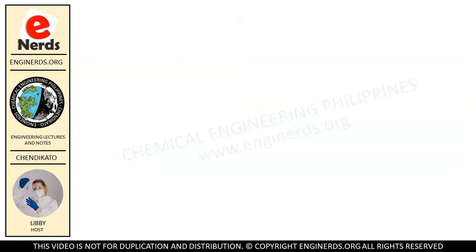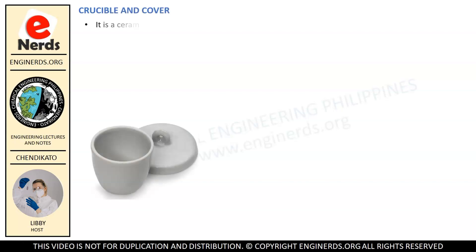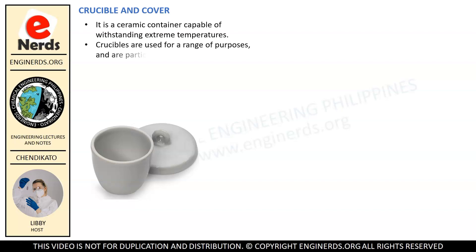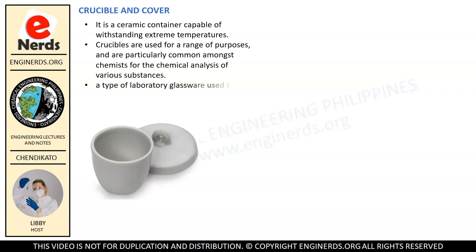Let me show you another laboratory tool called crucibles with its cover. It is a ceramic container capable of withstanding extreme temperatures. Crucibles are used for a range of purposes and are particularly common amongst chemists for the chemical analysis of various substances — a type of laboratory glassware used to burn, melt or mix solid chemical compounds over a burner.